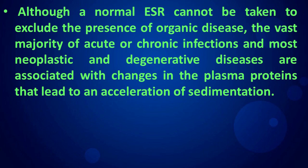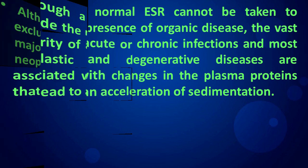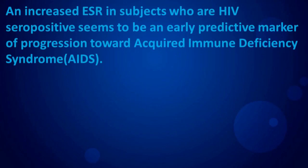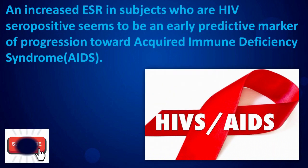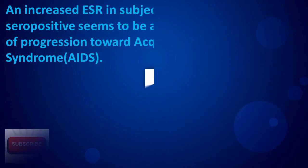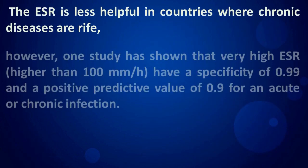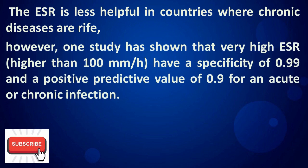Although a normal ESR cannot be taken to exclude the presence of organic disease, the vast majority of acute or chronic infections and most neoplastic and degenerative diseases are associated with changes in plasma proteins that lead to an acceleration of sedimentation. An increased ESR in subjects who are HIV seropositive seems to be an early predictive marker of progression toward acquired immune deficiency syndrome. The ESR is less helpful in countries where chronic disease is rife; however, one study has shown that very high ESR values have a specificity of 0.99 and a positive predictive value of 0.9 for an acute or chronic infection.